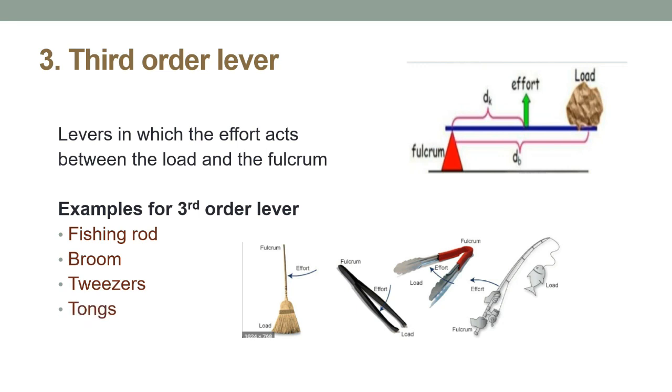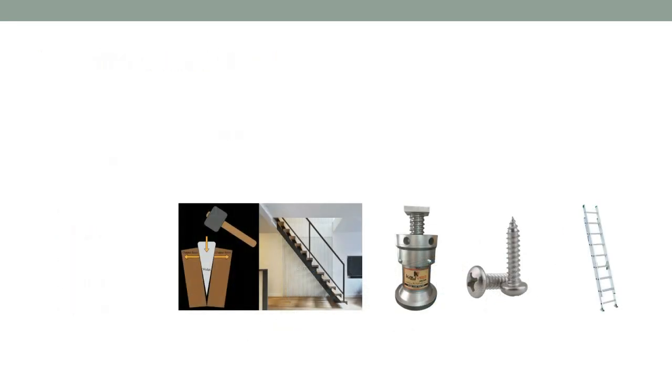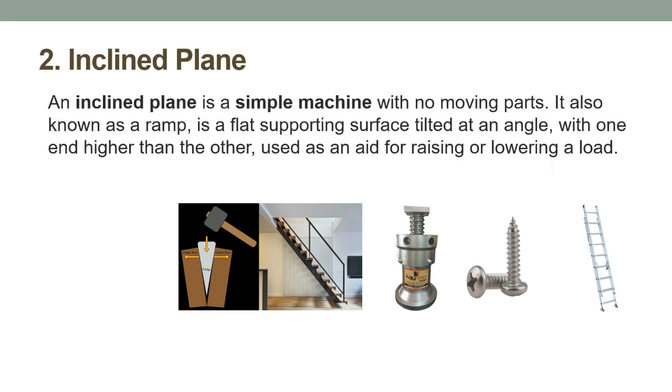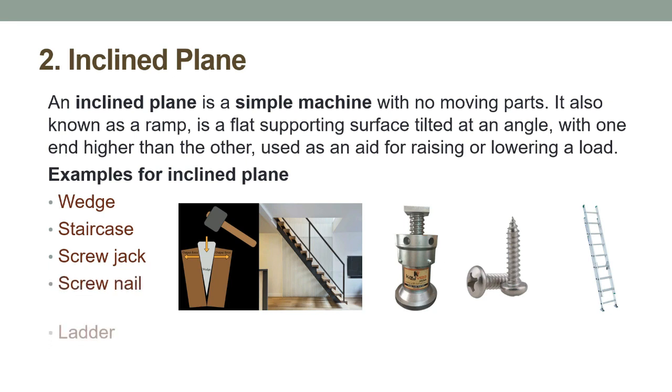Now we will move to the next form of simple machine, the inclined plane. Inclined plane is also known as ramp. It has no moving parts and is used to lift an object directly upwards. We know that it is very difficult to lift a heavy object directly upwards, so we are using an inclined plane to move it upwards using less effort. Wedge, staircase, screw jack, screw, nail, and ladder are some examples for inclined planes.